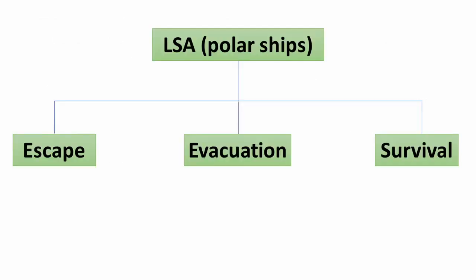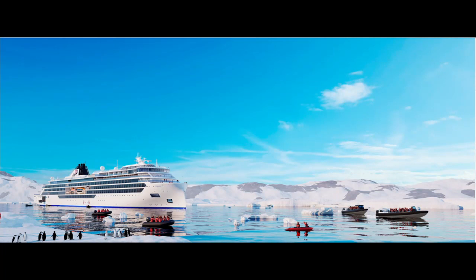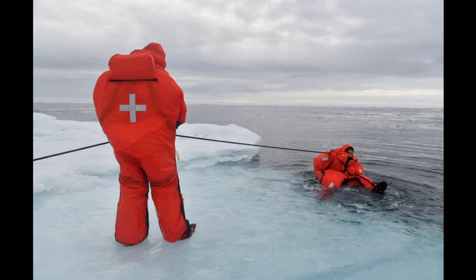Chapter 8: Life-saving Appliances and Arrangements. This chapter is explained under three topics: escape, evacuation, and survival. For escape, all exposed escape routes must be accessible, free from icing, and must have equipment to remove icing. Survival craft and muster stations should provide safe abandonment from the ship even in the worst weather conditions. The spacing of escape routes must be such that persons wearing layers of winter clothing can still move freely.